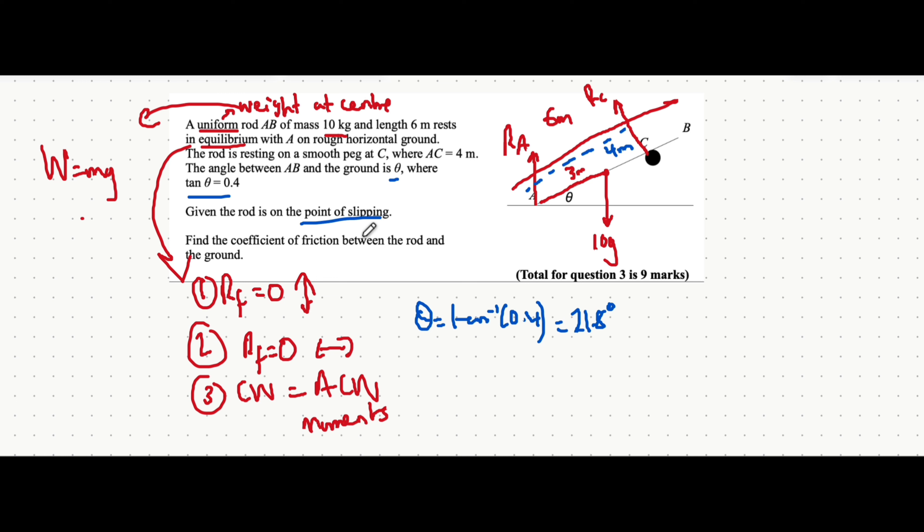It says given that the rod is on the point of slipping, that means it's still in equilibrium because it hasn't slipped yet. There's no motion yet. One thing you do have to note is, if this was to slide, which way would it slide? It would slide that way. Meaning friction, because it is on a rough ground, friction would act in this direction.